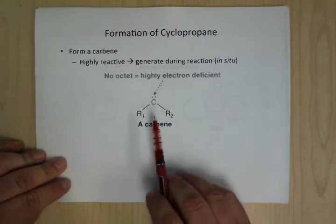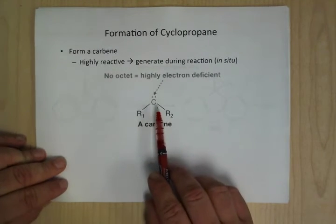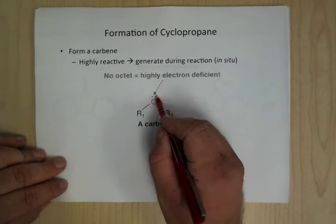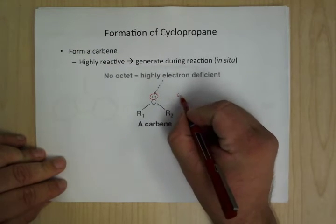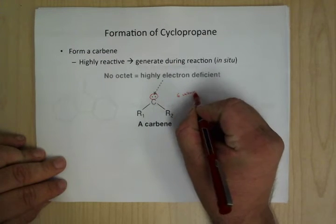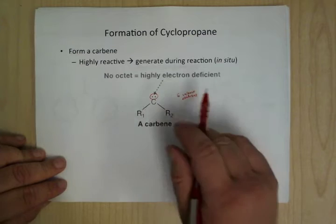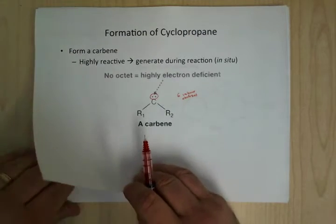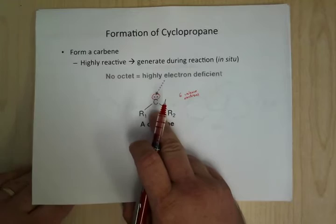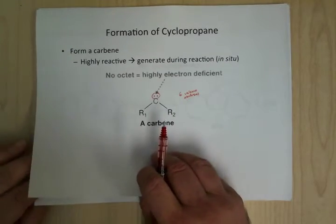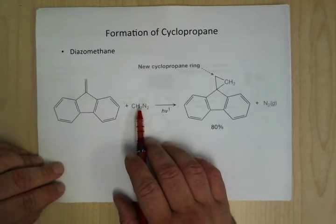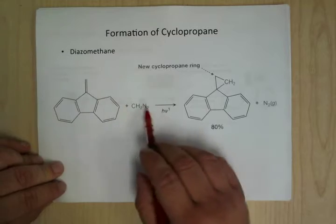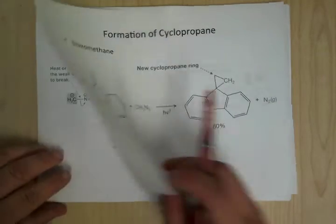One of the ways that you can form cyclopropanes is by forming what's called a carbene. The carbon does have a lone pair, but it doesn't have its octet filled — it only has six valence electrons, so it's deficient. It is highly reactive, so you have to generate it in situ during the reaction. One of the ways that you can do that is through what's called diazomethane, which will add directly to an alkene to make the cyclopropane ring.